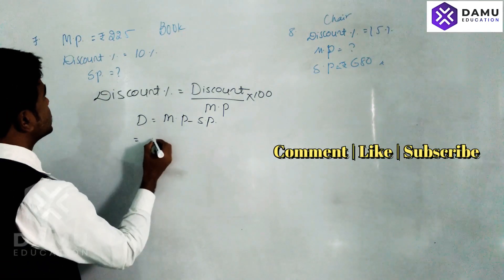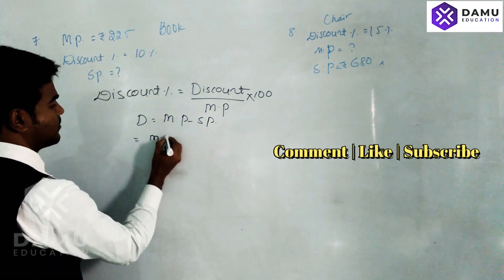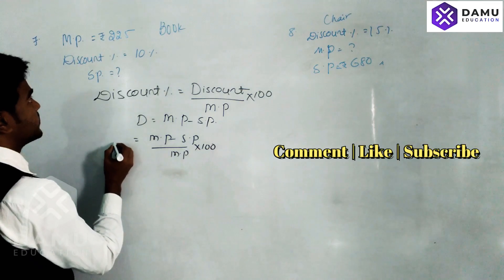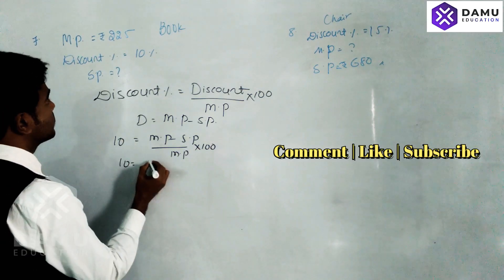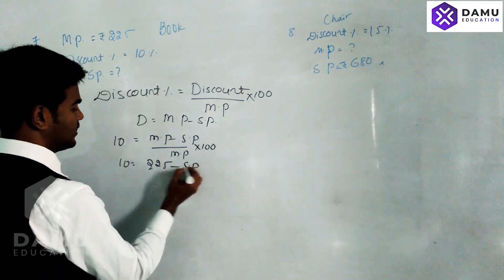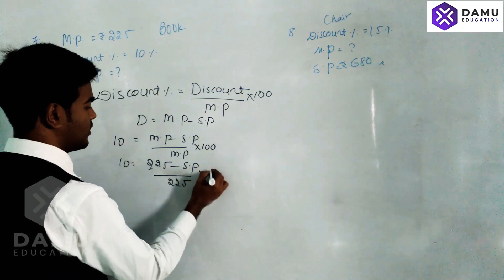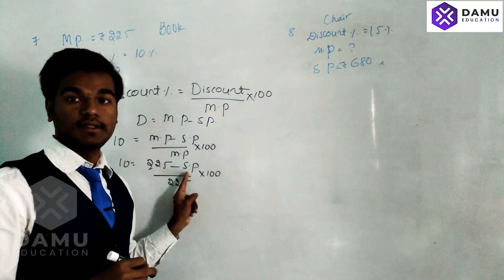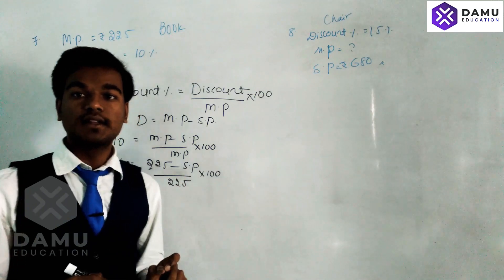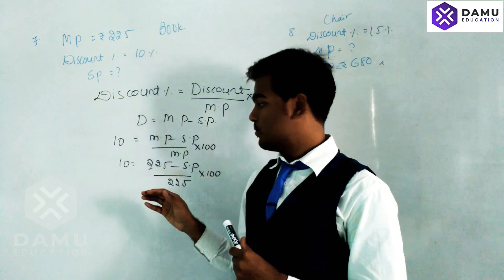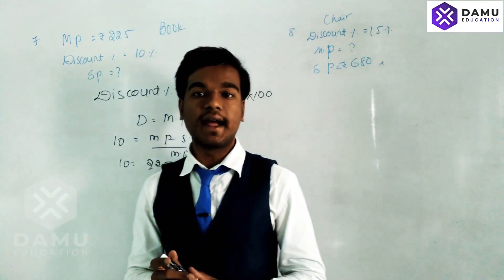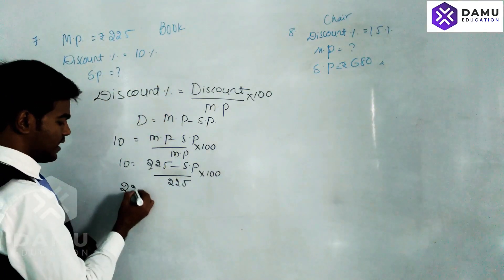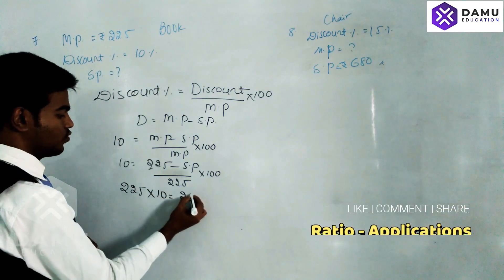So market price is 225. The formula is: market price minus selling price, divided by market price, multiplied by 100. Discount percentage is 10. So: 10 equals (225 minus SP) divided by 225, multiplied by 100. In the numerator, we multiply both quantities by 100. So: 100 multiplied by 25 into 10 gives us 225 minus SP, all multiplied by 100.